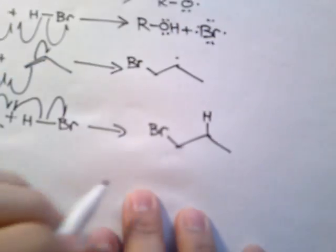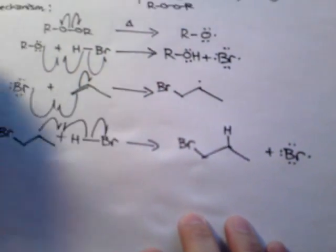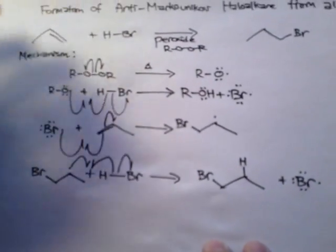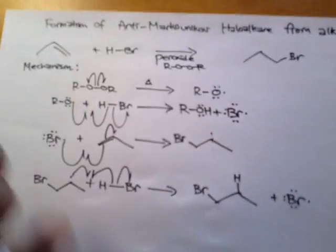The anti-Markovnikov haloalkane with another bromine radical. This is basically the formation of anti-Markovnikov haloalkane from alkenes. Good luck on your exam, guys.